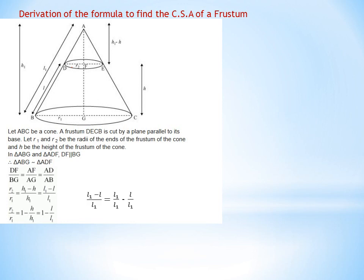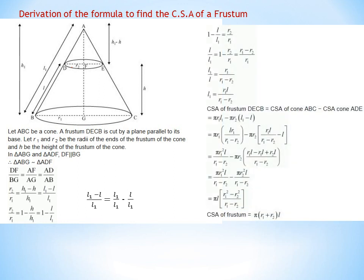Separating the slant height ratio: (L1−L)/L1 = 1 − L/L1. So R2/R1 = 1 − L/L1. Since we are deriving the curved surface area formula, we consider only the slant height — the surface visible to us — not the vertical height. Taking R2/R1 = 1 − L/L1 and transposing, we finally get L1 = R1·L / (R1 − R2).